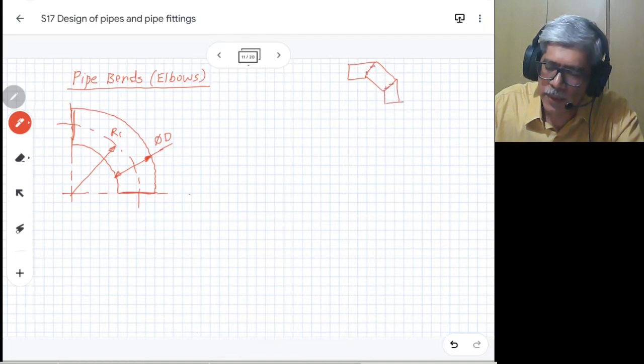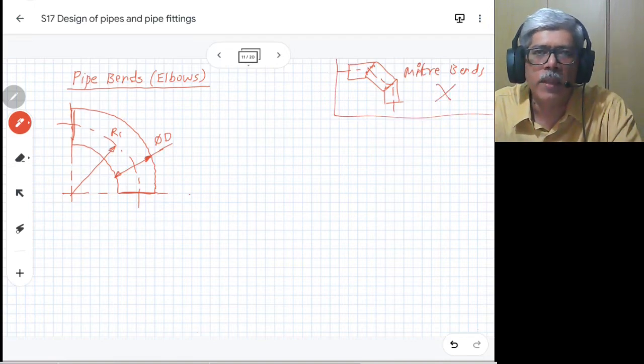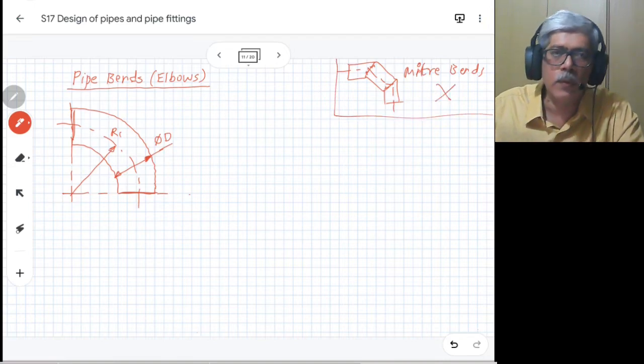These miter bends are made by welding pipeline pipes with respect to each other, known as miter (M-I-T-R-E) bends. This method is not applicable for this type of pipe bends; it is only applicable to the formed bends.